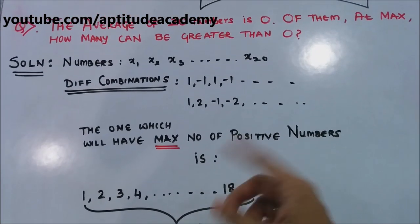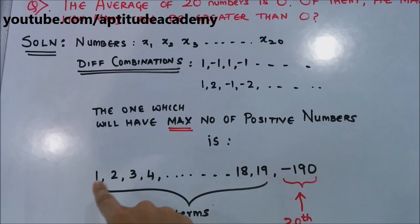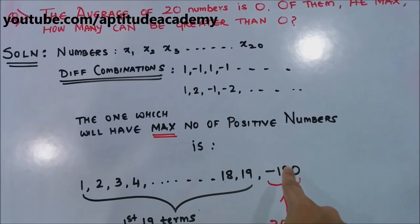It will also work for the negative terms. Like you can have this as minus 1, minus 2, minus 3. And your last term can be plus 190.